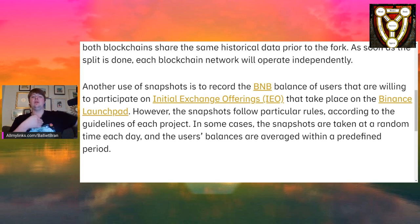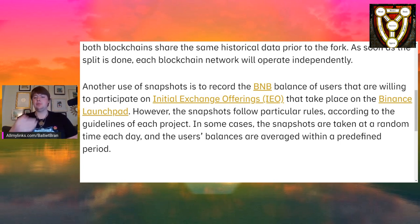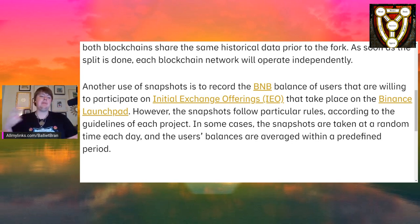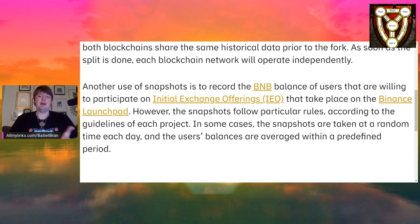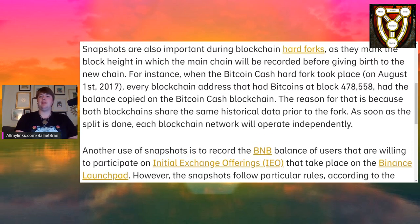Another use of snapshots is to record the BNB balance of users willing to participate in initial exchange offerings on the Binance Launchpad. However, the snapshots follow particular rules according to the guidelines of each project. In some cases, the snapshots are taken at random times each day, and the user's balances are averaged over a predefined period. Once that hard fork does happen and the chain splits off, we can incorporate some of the changes that Ethereum makes if we want to, or we don't have to — we're our own chain and we can choose what we want to incorporate.